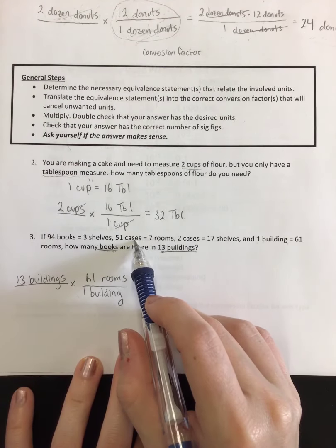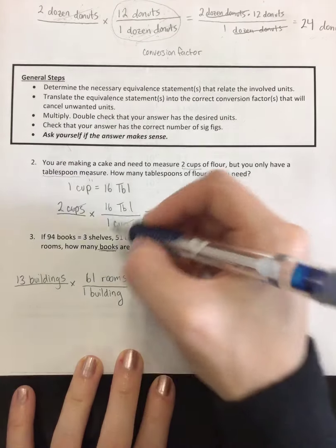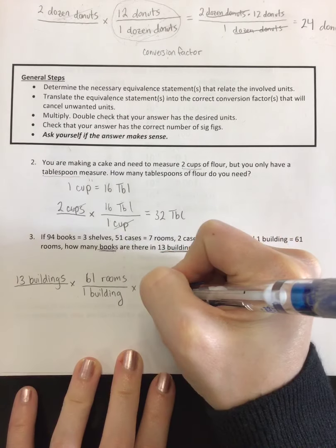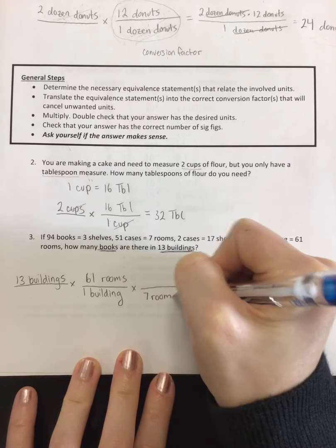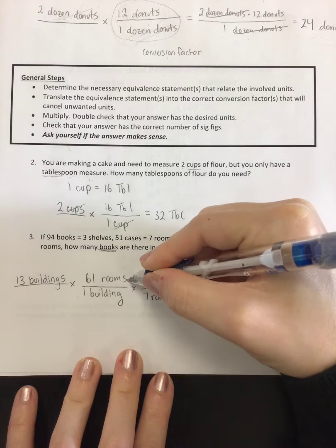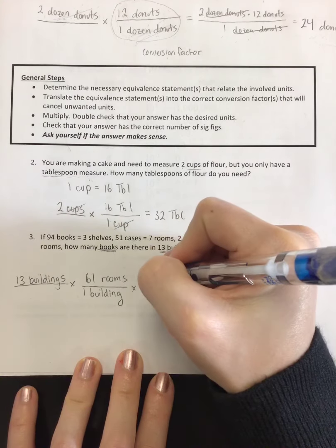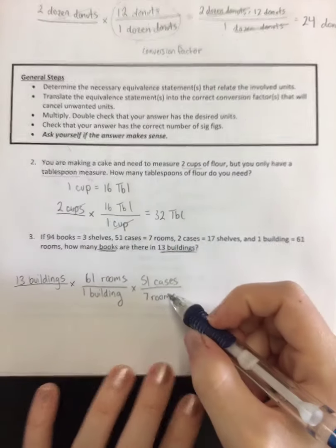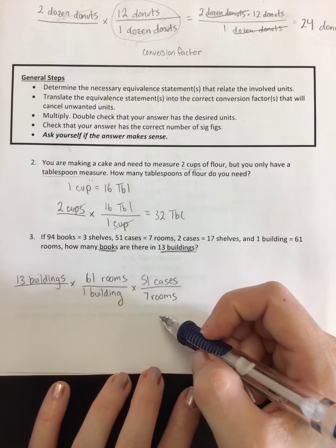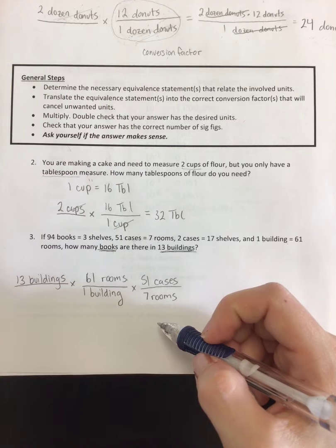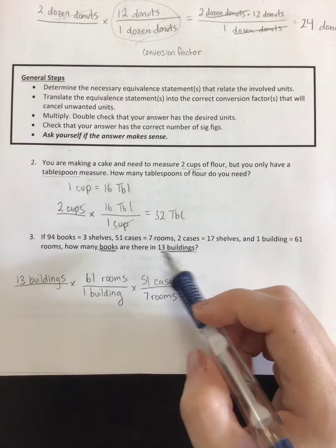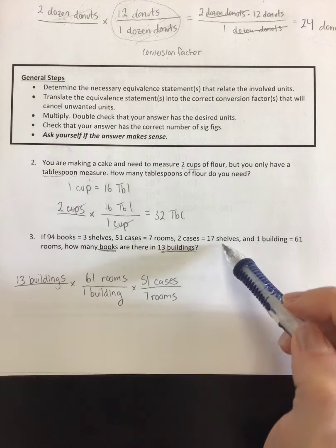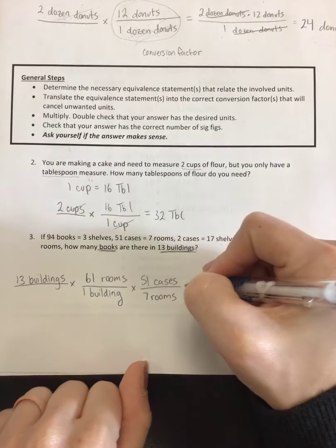Well, now I've got units of rooms. Where can I go from rooms? I know that seven rooms equal 51 cases. Still not books, but it's somewhere. I'm going to put seven rooms on the bottom so that it cancels with the units of rooms on top. And it equals 51 cases. Cool.